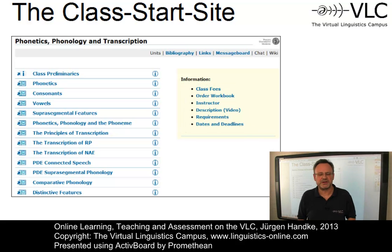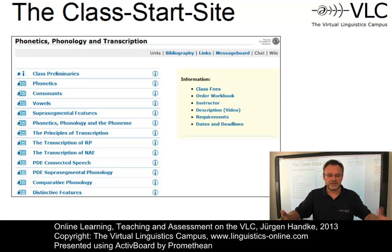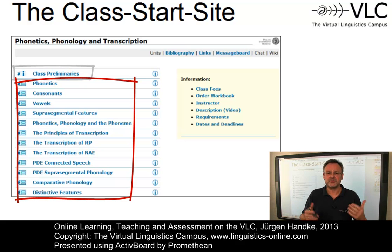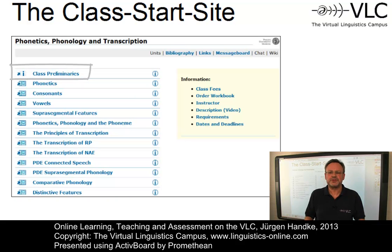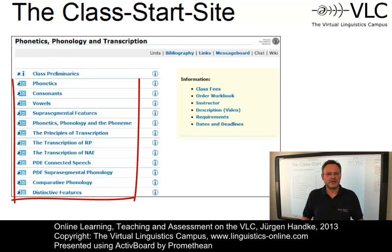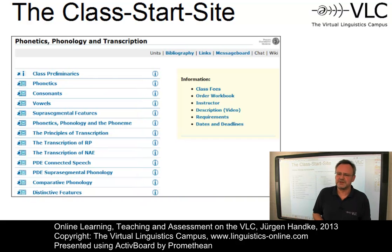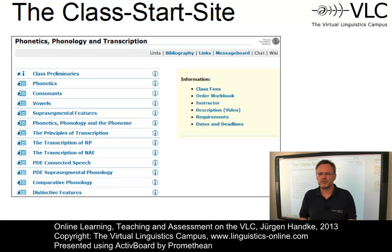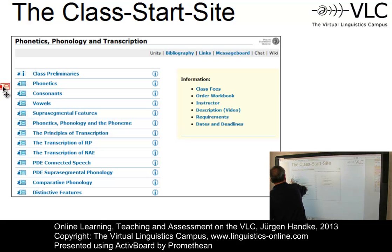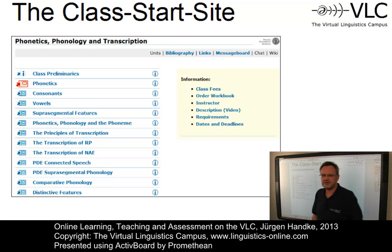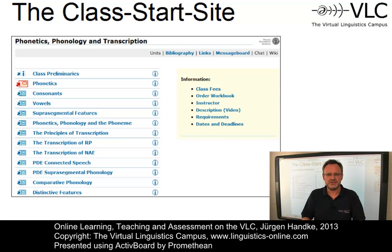Central to each class, however, are the units. Each class consists of a predefined number of units. In the case of this class, we have one introductory unit and twelve e-learning units. The introductory unit is mainly a textual repetition of what I am explaining in this video. The e-learning units contain the content of the class. After class activation, the current unit is marked red. So let's assume the unit Phonetics is currently in focus. The other units are accessible too, but the red indicator means this is what you should do next.